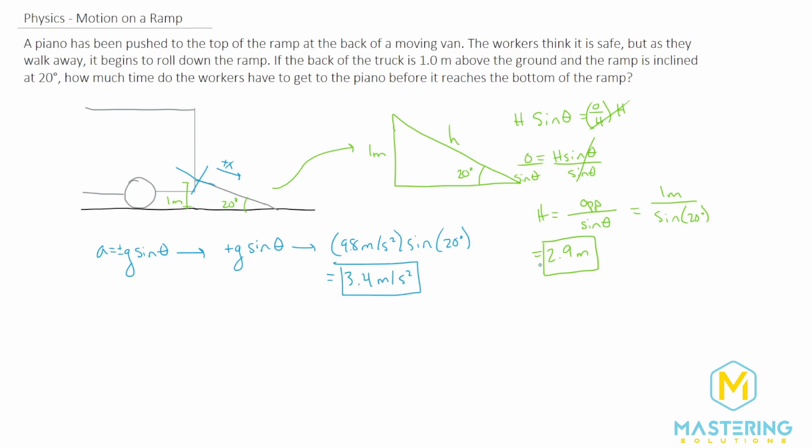So now we have these two components. Now we can plug them in to figure out how much time the workers have before the piano gets to the bottom of the ramp. We can use the kinematic equation: x final equals x initial plus velocity initial times time plus one half the acceleration times the time squared. We can use any kinematic equation we want if it has time and we have all the other variables in it.